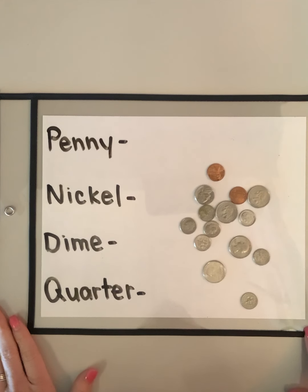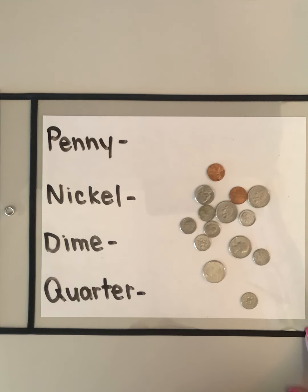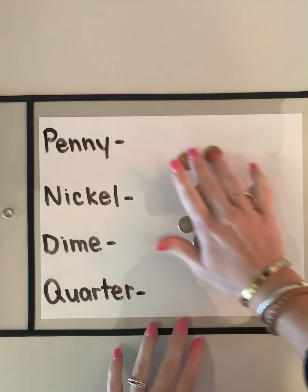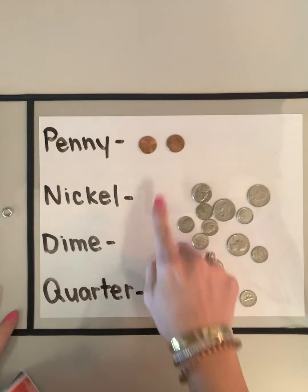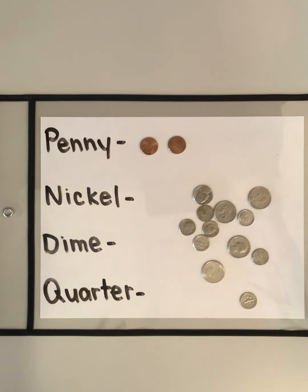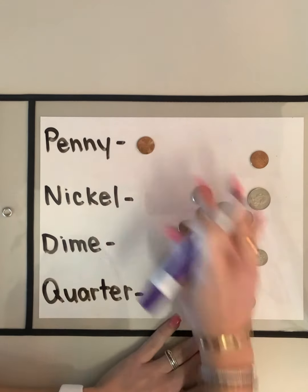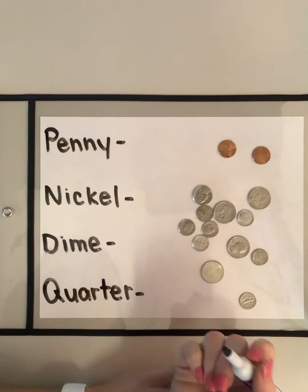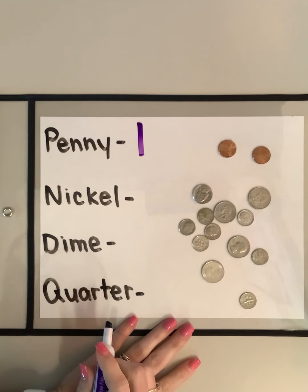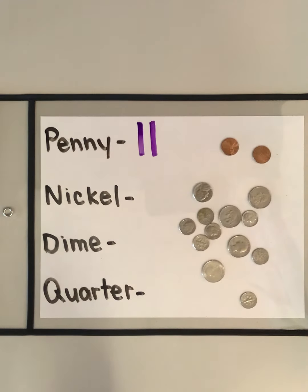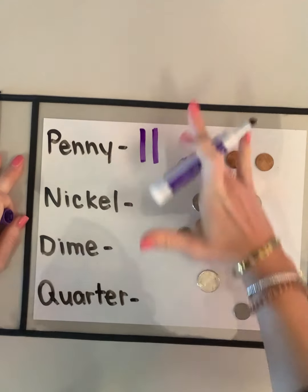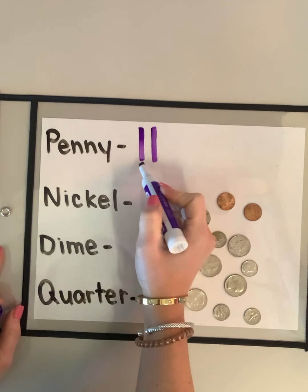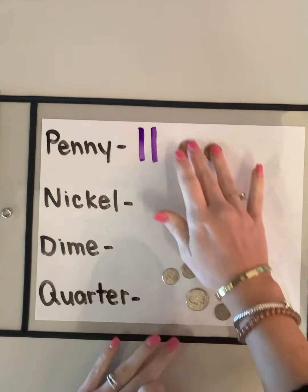Do you remember what pennies are made of? What makes them a different color than the rest? It starts with a C — copper. So I can easily tell I have this many pennies because they're the only ones that are copper. Let's count together: one, two. Two pennies. Now we're going to draw two tally marks — one for each penny. I don't want my tally marks right next to each other; I want them a good distance apart so I can tell this is one and this is two.